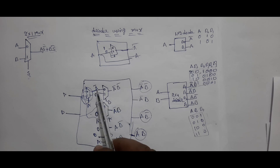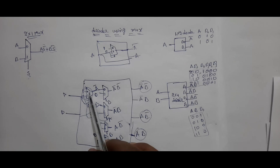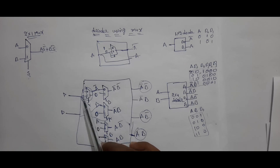This A-bar requires another inverter, so another 2x1 MUX is required. A is the selection: if A is 0, then 1 comes; if A is 1, then 0 comes. That's why we need one more 2x1 MUX.